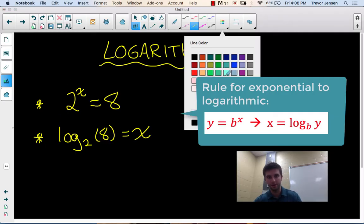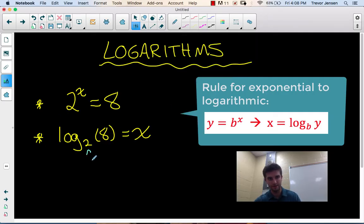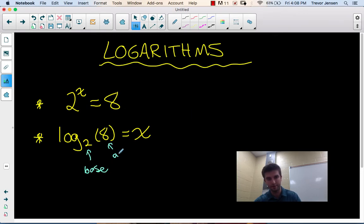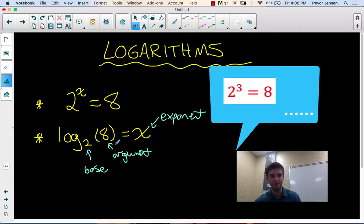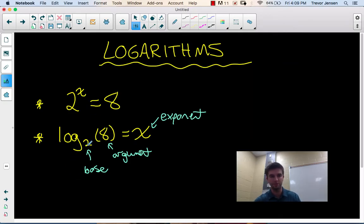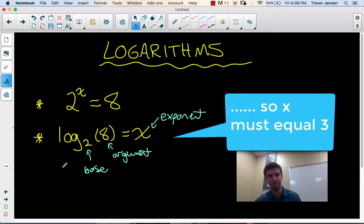The components of the logarithmic expression are a base of the logarithm and an argument of the logarithm. The answer we get if we were to evaluate log base 2 of 8 is the exponent that would go on the base to get the argument. So if I were to evaluate log base 2 of 8, the answer would be the exponent that goes on 2 to give us 8. I'm going to show you how we can evaluate that on your calculator.